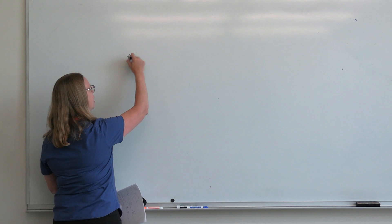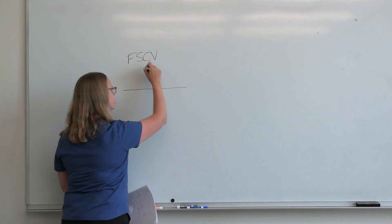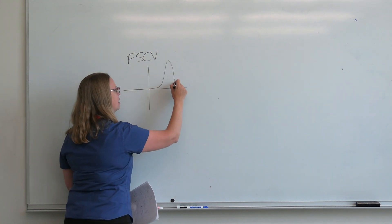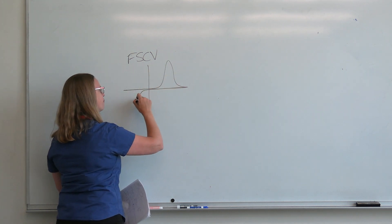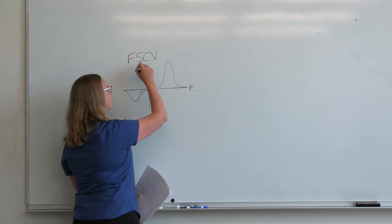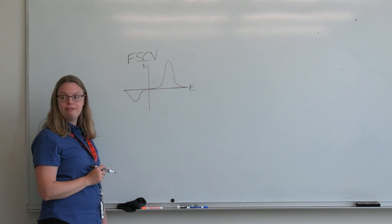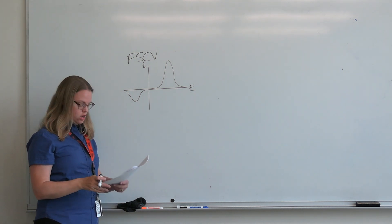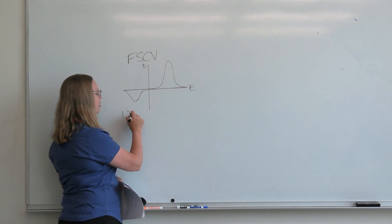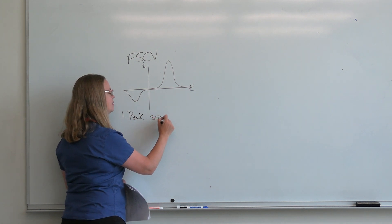Now I'm going to talk about shape and FSCV. We're just going to do dopamine for now; I'll come back to some other compounds in a future time. This is a typical FSCV cyclic voltammogram that we see, so let's talk about a few of the features of this CV.